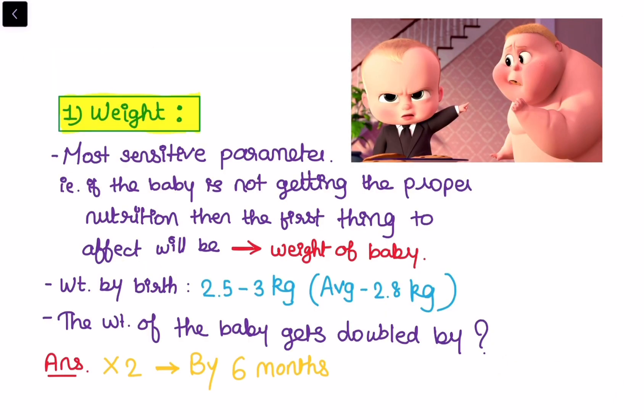Talking about the first one, weight — it is the most sensitive parameter. This means that if the baby is not getting proper nutrition, the first thing to be affected or noticed will be the weight of the baby. The weight of the baby by birth is 2.5 to 3 kg; on average it is about 2.8 kg. The weight of the baby gets doubled by the age of six months. This is the most common question asked in various medical exams.